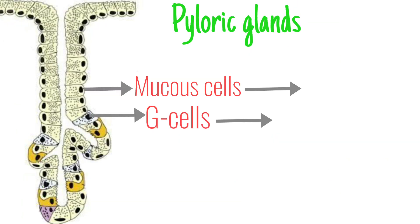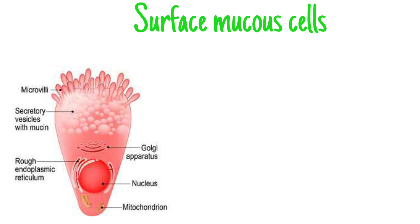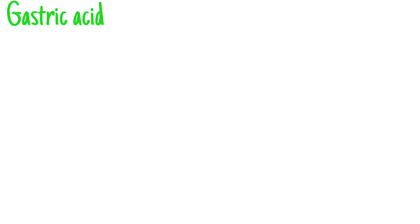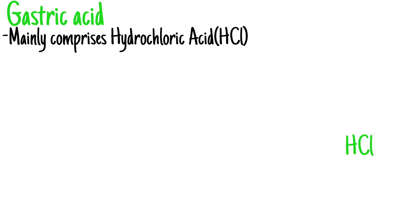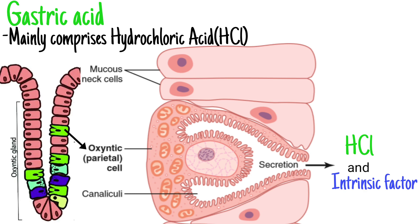Pyloric glands produce mucus and gastrin hormone, and finally the surface mucus cells produce viscid mucus, coating the entire stomach mucosa. Gastric acid mainly comprises hydrochloric acid, which is released along with intrinsic factor by oxyntic cells of oxyntic glands.